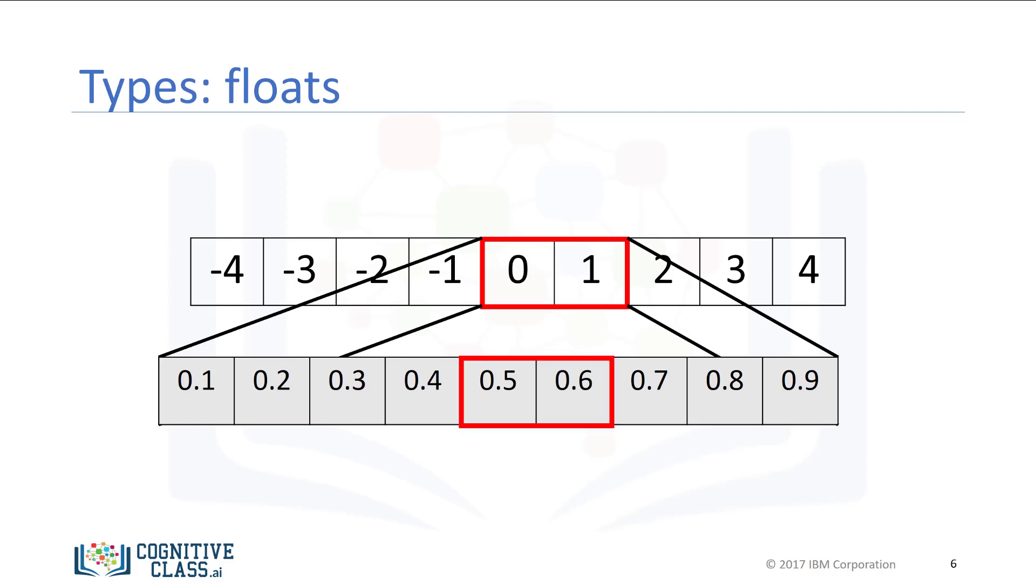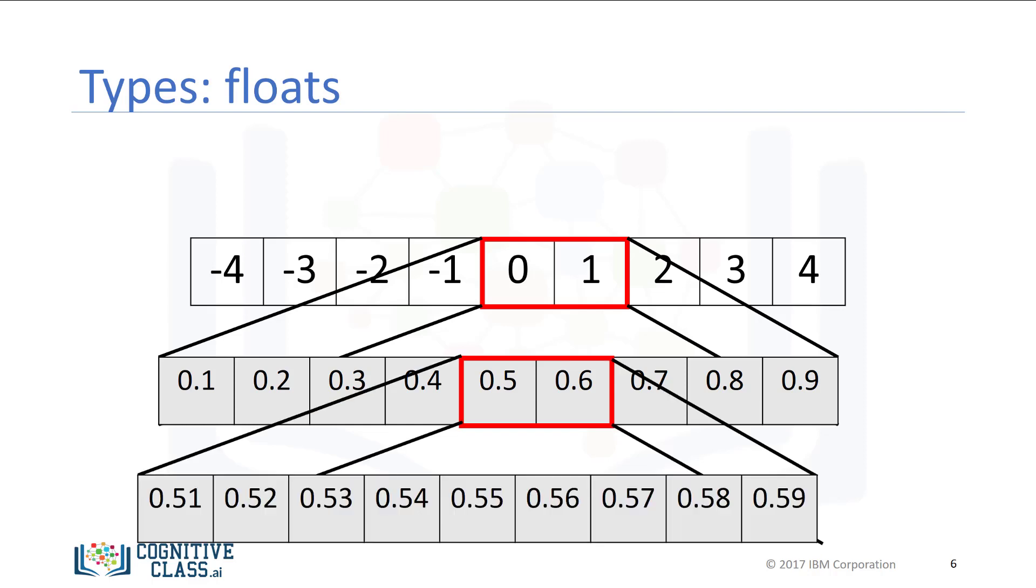Similarly, consider the numbers between 0.5 and 0.6. We can select numbers in between them. These are floats as well. We can continue the process, zooming in for different numbers. Of course, there is a limit, but it is quite small.